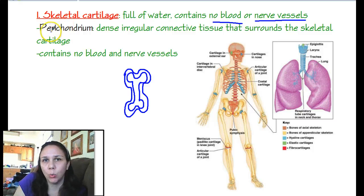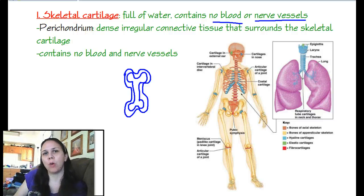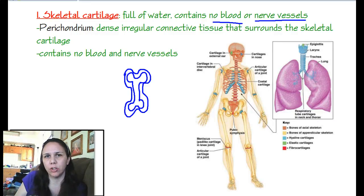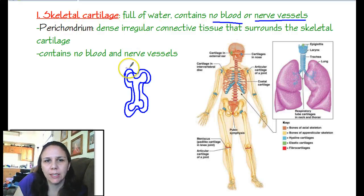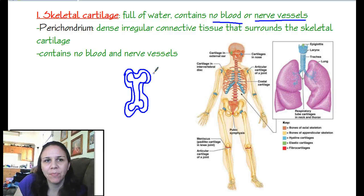Peri means around, and chondro means cartilage — like we learned when we talked about the hypochondriac region being below the cartilage of your ribs. So the perichondrium is just this layer of dense, irregular connective tissue that surrounds the skeletal cartilage and keeps it all intact — like the boundary around it.